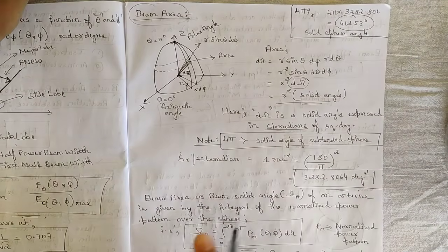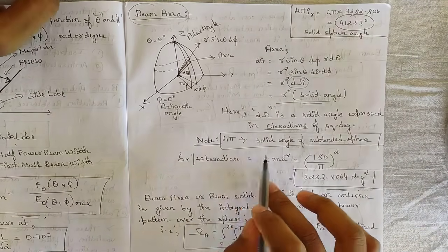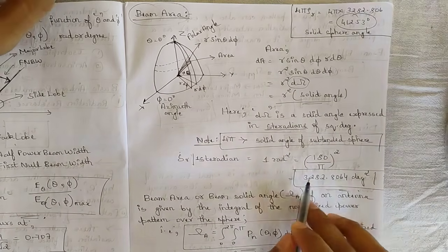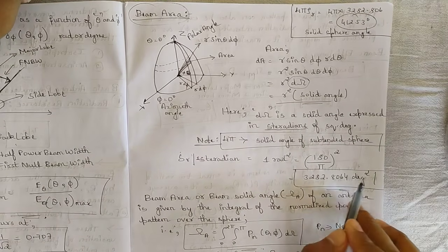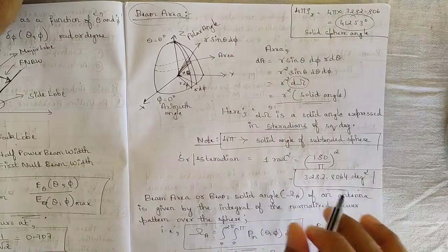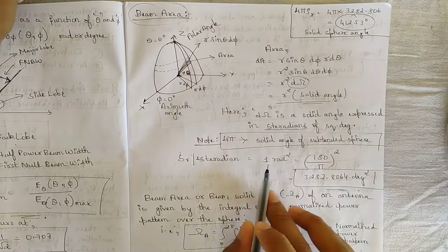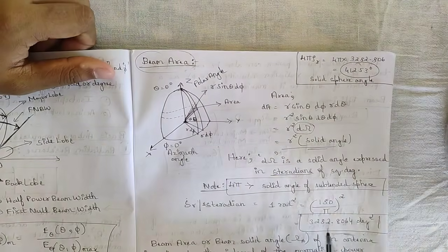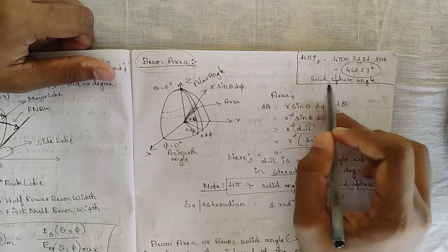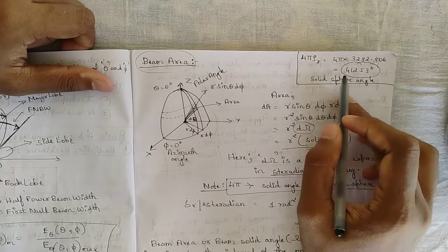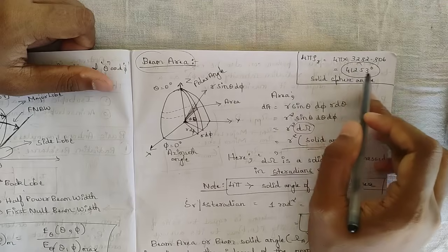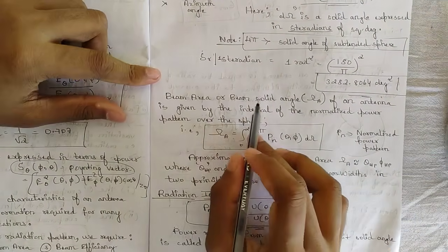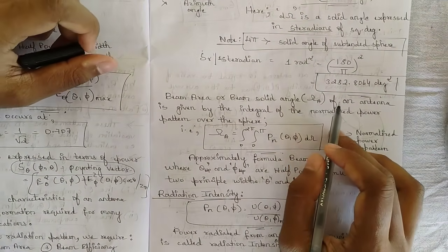d omega is a solid angle expressed in steradians or square degrees. Note that 4π is the solid angle subtended by a complete sphere. One steradian equals one radian squared, which in degrees is (180/π)² ≈ 3282.806 square degrees. For the full sphere of 4π steradians, the total solid angle is approximately 41,253 square degrees. These unit conversions are mentioned just for your knowledge and are not strictly in your syllabus.